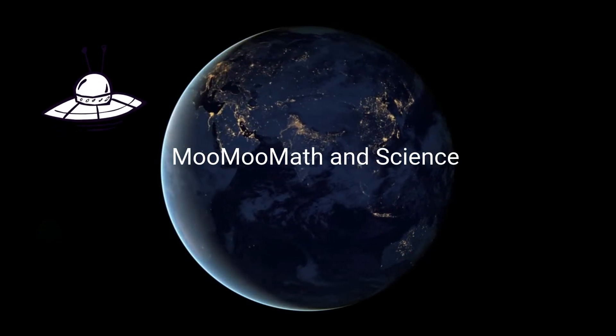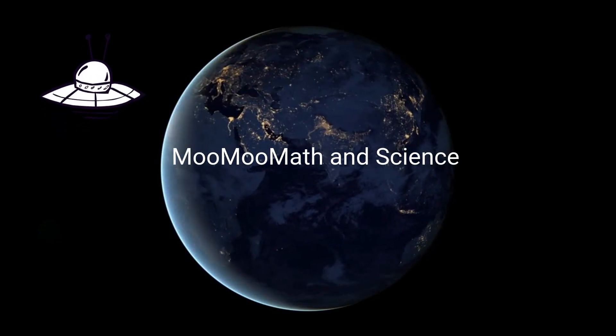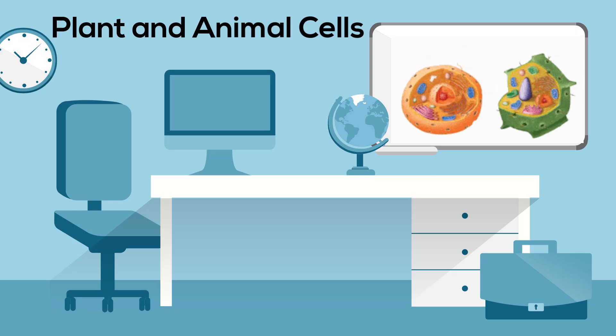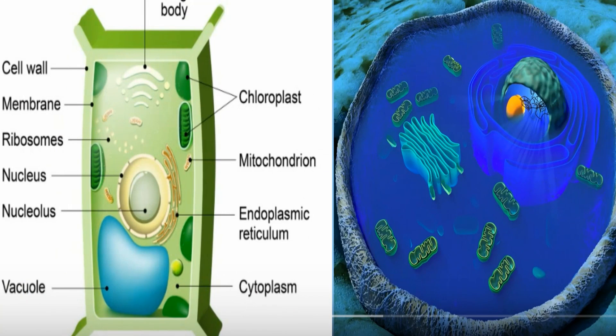Welcome to Moo Moo Math and Science. In this video I'd like to talk about the difference between a plant and an animal cell. Plant and animal cells are both eukaryotic cells, which means they have a nucleus and membrane-bound organelles such as mitochondria and the endoplasmic reticulum.